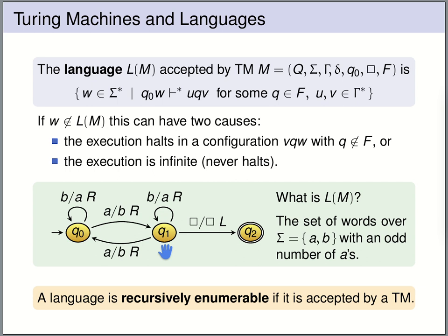The class of languages accepted by Turing machines is called recursively enumerable. A language is called recursively enumerable if it is accepted by some Turing machine.